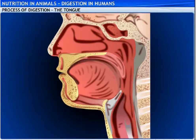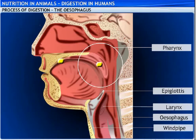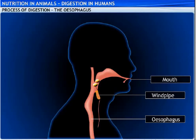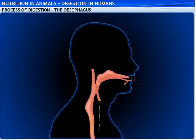The buccal cavity leads to a common region for food and air called the pharynx. Do you know why adults insist that talking with your mouth full is a bad habit? This is because both the esophagus and the windpipe carrying air from the nostrils to the lungs start from the pharynx. When you swallow food, the flap-like valve called the epiglottis closes the windpipe. So if you talk while eating, chances are that the valve does not close fully, thereby allowing food particles to enter the windpipe — this is why you feel choked.